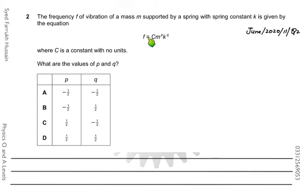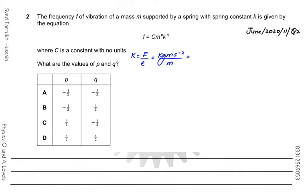F is frequency, C is a constant with no units, M is mass, and K is the spring constant. Spring constant is defined as force per unit extension. Force is kg·m·s⁻², and extension is in meters — meter cancels with meter — so kg·s⁻² is the SI base unit for spring constant.